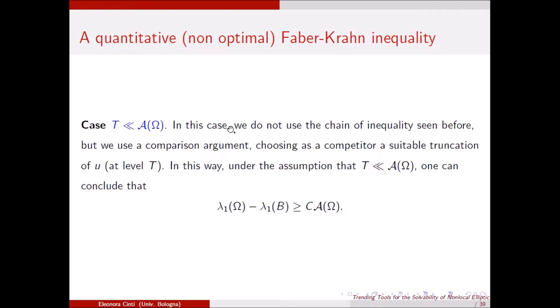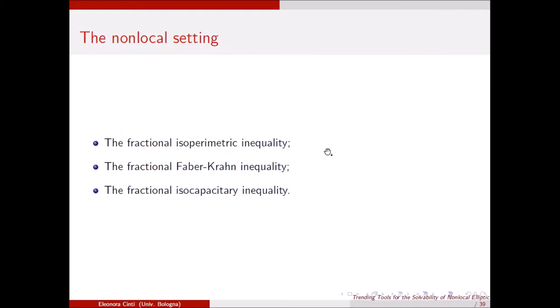This is a proof that uses the quantitative isoperimetric inequality and gives a non-optimal exponent, but since it is not by contradiction, you can keep track of the constants throughout all steps, so the constant is explicit. I showed this proof in some detail because, as we will see in the second part of the talk, I want to consider this kind of problem in the fractional setting, and it was better to first show the proof in the local classical setting.